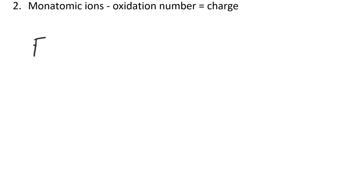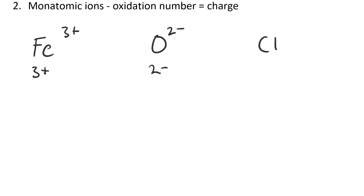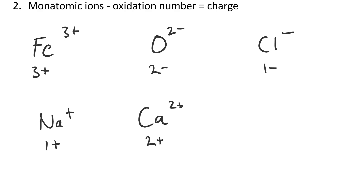Rule two: for monatomic ions, the oxidation number is the charge. Fe³⁺ (iron three) — the charge is three plus, so the oxidation number is three plus. For O²⁻, the charge is minus two, so the oxidation number is minus two. For Cl⁻, it's minus one. For Na⁺, it's plus one. For Ca²⁺, it's plus two. For aluminum (Al³⁺), it's plus three.